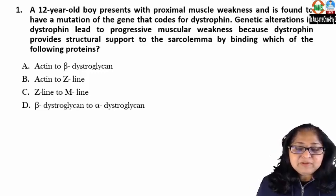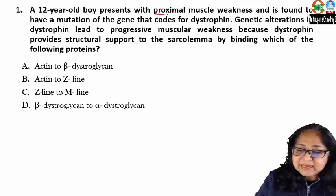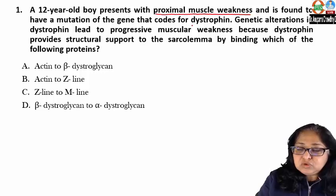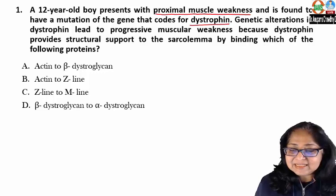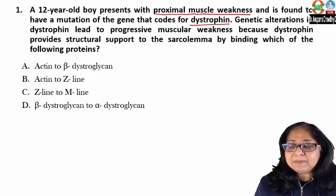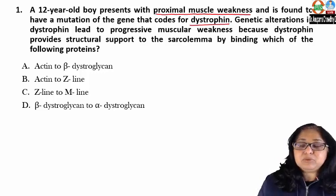A 12-year-old boy presents with proximal muscle weakness and is found to have a mutation of the gene that codes for dystrophin. Genetic alterations in dystrophin lead to progressive muscular weakness because dystrophin provides structural support to the sarcolemma by binding which of the following proteins?